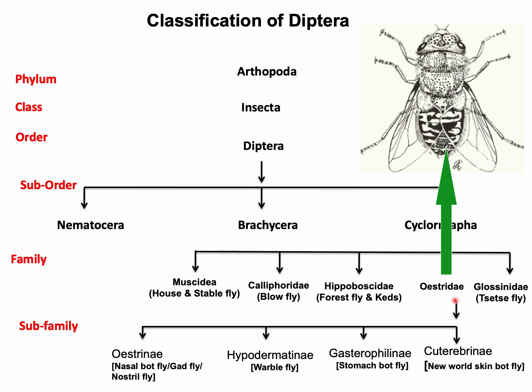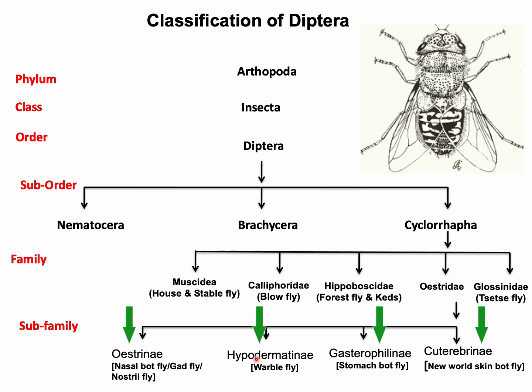Larvae of these flies are stout, stout-bodied, and obligatory endoparasites of different animals. There are four important tribes under the family Oestridae: Oestrini, Hypodermatini, Gastrophilini, and Cuterebrini.